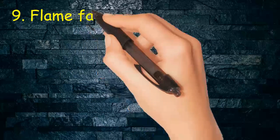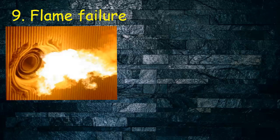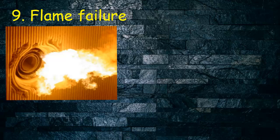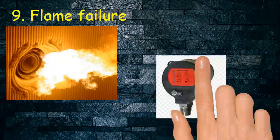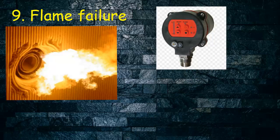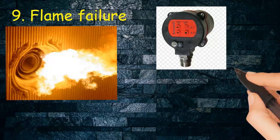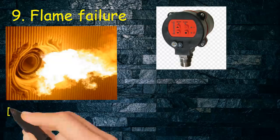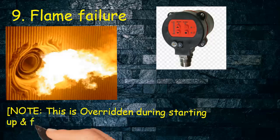Flame failure. The photocell flame eye is used to detect the flame inside boiler. If the burner is abruptly stopped or during starting the main burner is not producing flame, the photocell will detect the absence of the flame and sound an audio visual alarm. Note, this is overridden during starting up and firing up of the boiler.